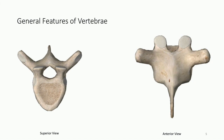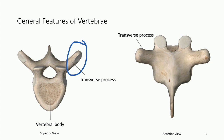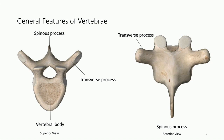When we think about the vertebra, we want to start with some general features. Here we can see two different views: a superior view looking from the top down, and an anterior view looking at the front side. The first thing we can see is a large vertebral body, which sits very posteriorly and acts as the major structure. We also find transverse processes on the right and left sides. There's also a singular spinous process — it's called that because it's pointy. When you feel your spine through your skin, you can feel those spinous processes.